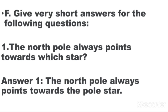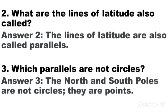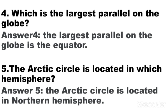Question number 5: give very short answers for the following questions. Number 1: The North Pole always points towards which star? Answer: The North Pole always points towards the Pole Star. Question number 2: What are the lines of latitude also called? Answer: The lines of latitude are also called parallels. Question number 3: Which parallels are not circles? Answer: The North and South Poles are not circles — they are points. Question number 4: Which is the largest parallel on the globe? Answer: The largest parallel on the globe is the Equator. Question number 5: The Arctic Circle is located in which hemisphere? Answer: The Arctic Circle is located in the Northern Hemisphere.